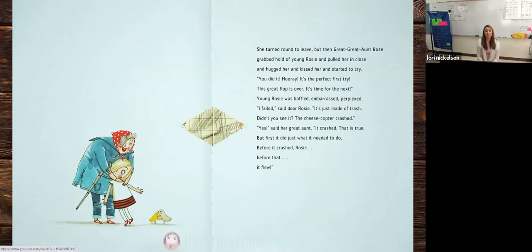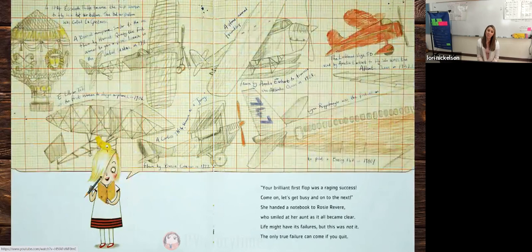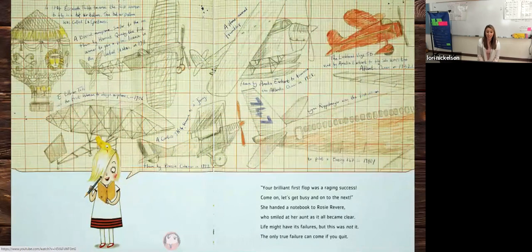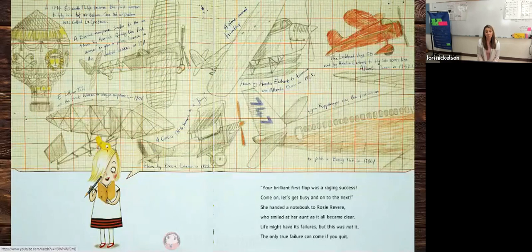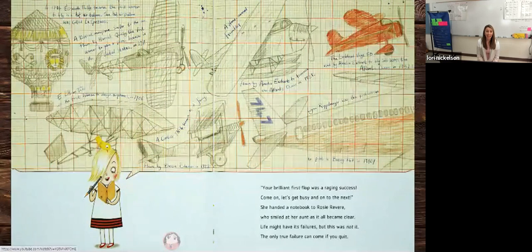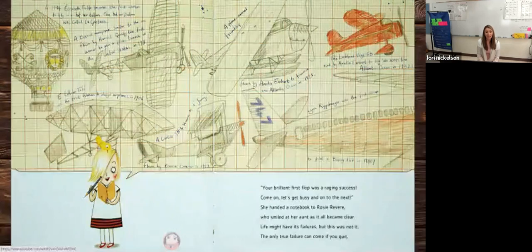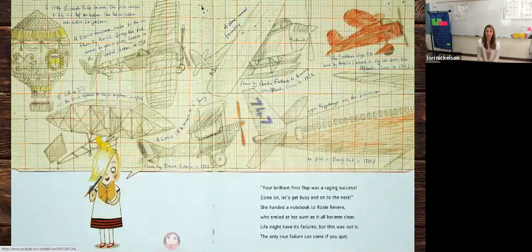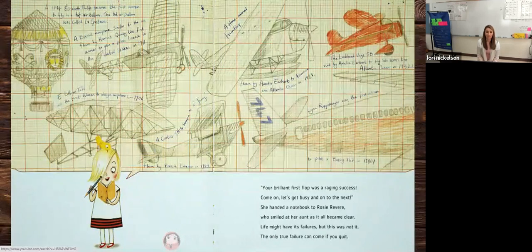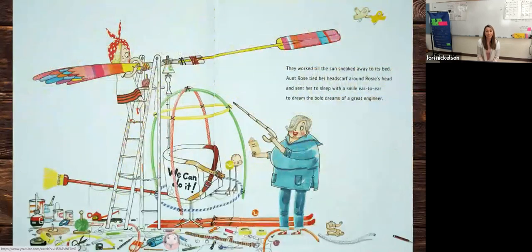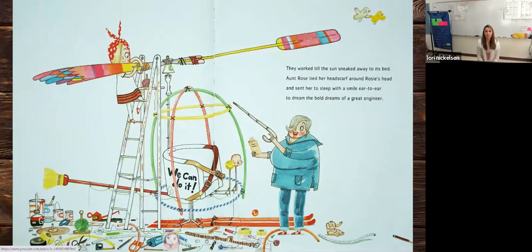Your brilliant first flop was a raging success. Come on, let's get busy and go on to next. She handed a notebook to Rosie Revere, who smiled at her aunt as it all became clear. Life might have its failures, but this was not it. The only true failure is if you quit. They worked till the sun sneaked away to its bed. Aunt Rose tied her headscarf around Rosie's head and sent her to sleep with a smile ear to ear to dream the bold dreams of a great engineer.